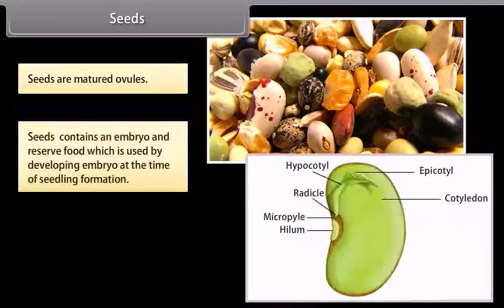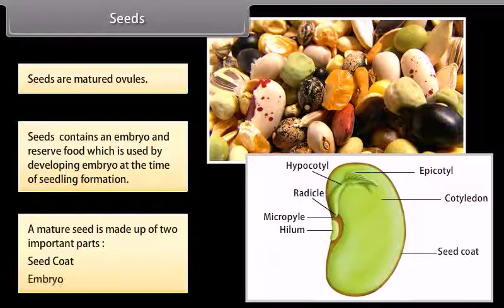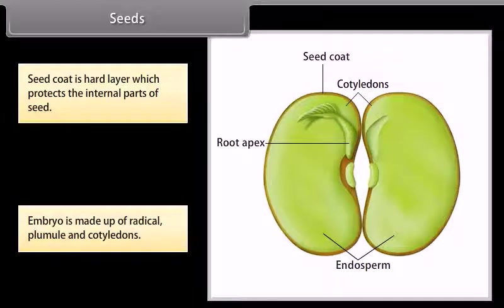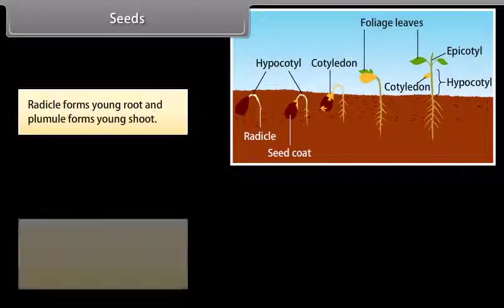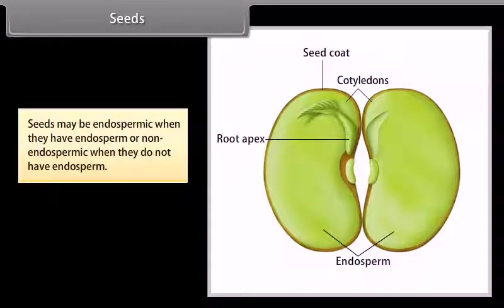Seeds are matured ovules. Seeds contain an embryo and reserve food which is used by the developing embryo at the time of seedling formation. A mature seed is made up of two important parts: seed coat and embryo. The seed coat is a hard layer which protects the internal parts of the seed. The embryo is made up of radicle, plumule, and cotyledons. Radicle forms the young root and plumule forms the young shoot. Seeds are monocotyledonous when they have one cotyledon, or dicotyledonous when they have two cotyledons. Seeds may be endospermic when they have endosperm, or non-endospermic when they do not have endosperm.